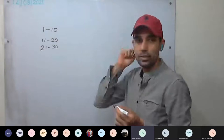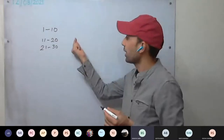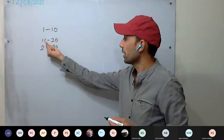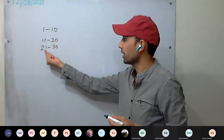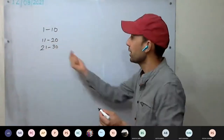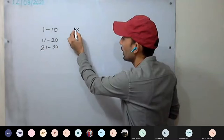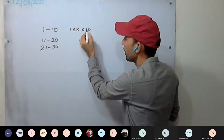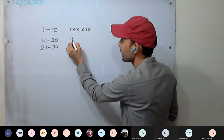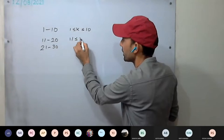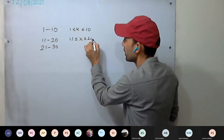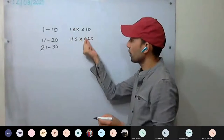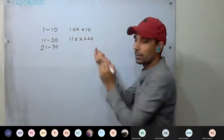Earlier in the second question we were having class intervals 1 to 10, 11 to 20, 21 to 30. Here the lower limit was included as well as the upper limit was included — the equal to sign was there.